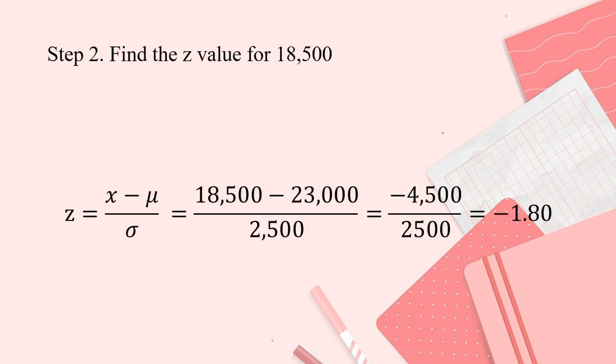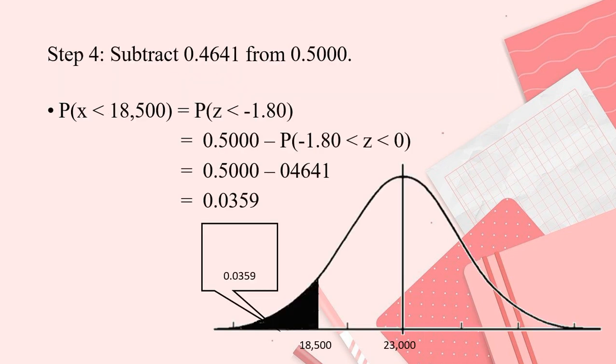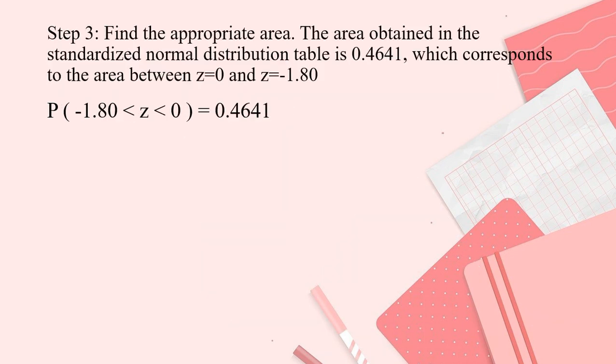Step 2, you will find the value. Our given X is 18,500. And we got it. That is negative 1.80 or 1.8, that is just the same. Next. So to get the 1.80, what will you do next?